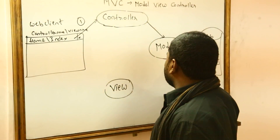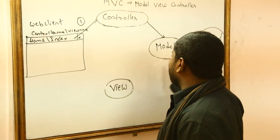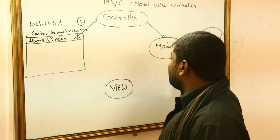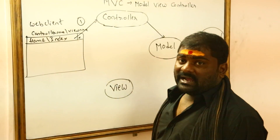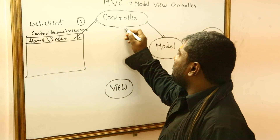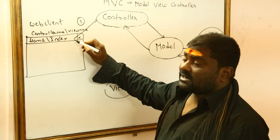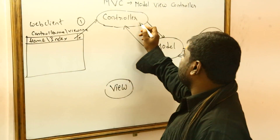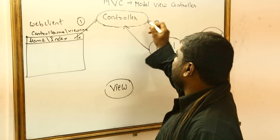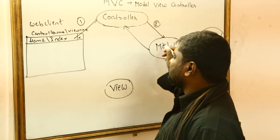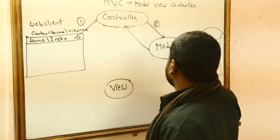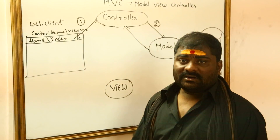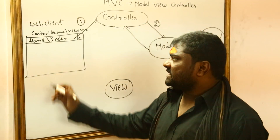The model gets the data from the database and invokes back the controller. Step one: controller responds to the user request. Step two: controller forwards the request to the model. Step three: model communicates with the database.